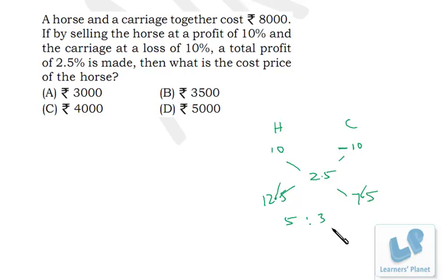That is 5000 and 3000. So cost price of the horse is 5000, cost price of the carriage is 3000. It's very simple.